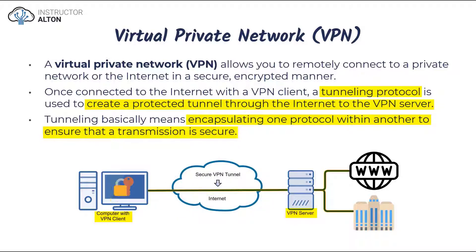Prying eyes trying to get in can't, because they're outside of this tunnel. The tunnel is encrypting your data, and your data is traveling inside this encrypted tunnel. There are a lot of protocols that make it work, which is beyond the scope of this course, but what you need to understand is that this creates an additional layer of security to ensure that our data traveling across the internet does so in a very secure manner.